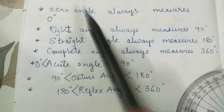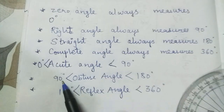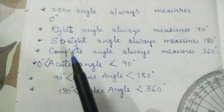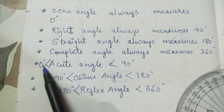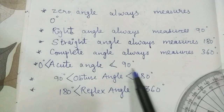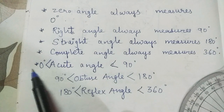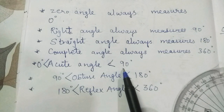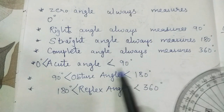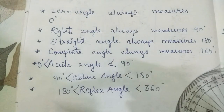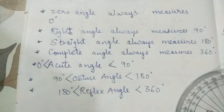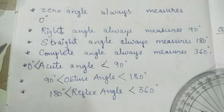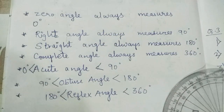You can write this beside the diagram — for example, beside the acute angle if there is space. If there is no space, you can write below the diagrams. Now let's start with Practice Set 2.